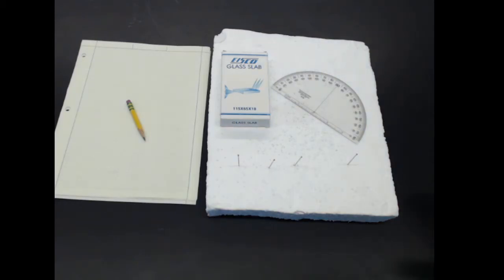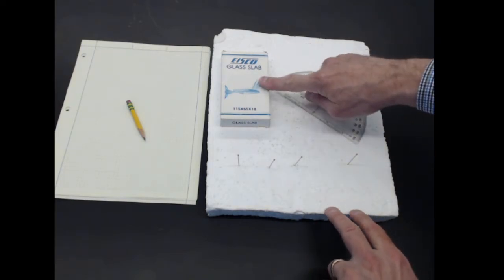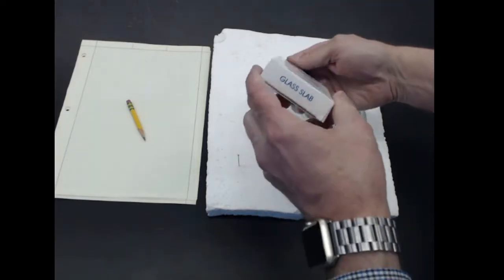This is the equipment we're going to use for this experiment. To start with, this is the glass slab. It comes in a little box. I'll just take it out.